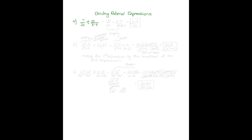Now we're going to divide rational expressions. Example number four: five over two x divided by ten over x minus four. To divide, we multiply the first expression by the reciprocal of the second. So we keep five over two x and change to multiplication, then multiply by the reciprocal: x minus four over ten.